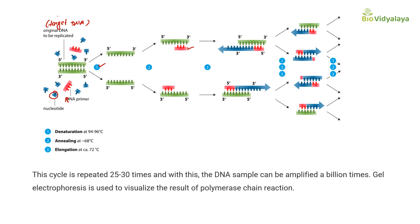These three steps repeat approximately 25 to 30 times, and after that we get billions of copies of the targeted DNA. Denaturation occurs at 94 to 96 degrees Celsius (approximately 92 degrees Celsius), annealing at 68 degrees Celsius, and elongation at 72 degrees Celsius. This cycle is repeated 25 to 30 times, and the DNA sample can be amplified a billion times. Gel electrophoresis is used to visualize the result of polymerase chain reaction.